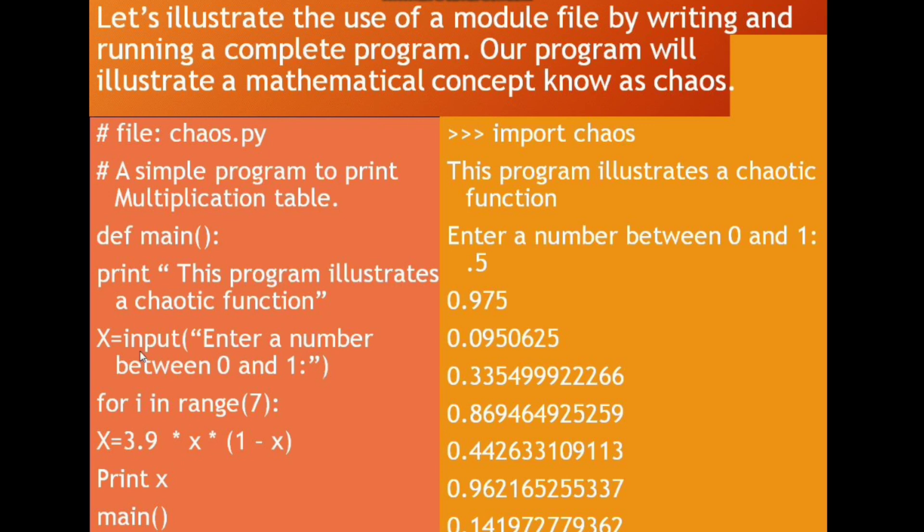for is the looping statement. We are looping here 1 to 7. x is a variable used to store output what we are getting from this mathematical chaos.